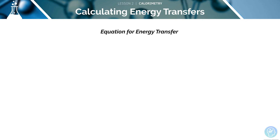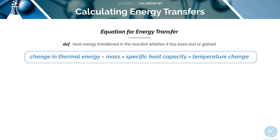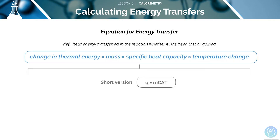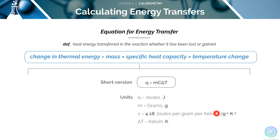These two factors are accounted for in the following equation. We can work out the heat energy transferred in a reaction, whether it has been lost or gained. The equation is: the change in thermal energy is equal to the mass times the specific heat capacity times the temperature change, or Q = mcΔT. Here are the units for this equation — the units for specific heat capacity are joules per gram per Kelvin.